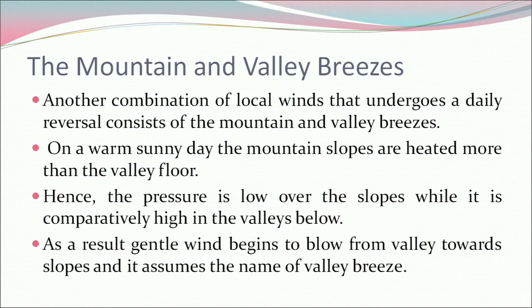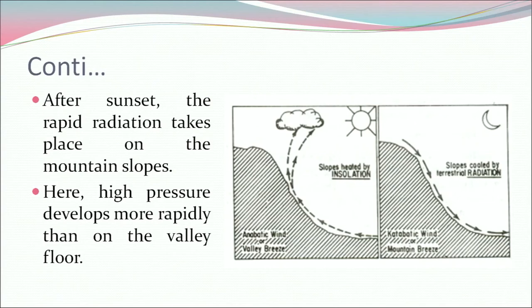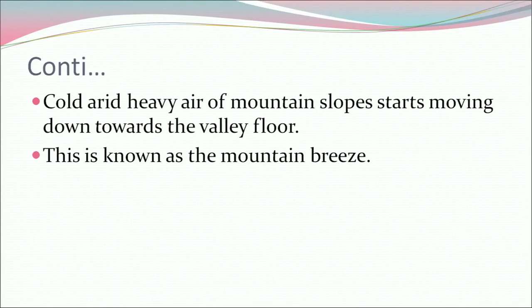What are mountain and valley breezes? Another combination of local winds that undergoes a daily reversal consists of the mountain and the valley breeze. On a warm sunny day, the mountain slopes are heated more than the valley floor. Hence, the pressure is low over the slopes while it is comparatively high in the valleys below. As a result, gentle wind begins to blow from valley towards the slope — this is called the valley breeze. After sunset, rapid radiation takes place on the mountain slopes. High pressure develops more rapidly there than on the valley floor. Cold, dense, heavy air of the mountain slopes starts moving down to the valley floor. This is known as the mountain breeze.